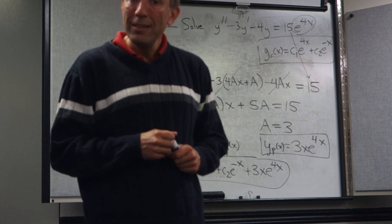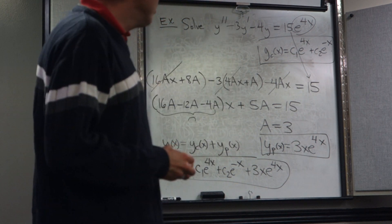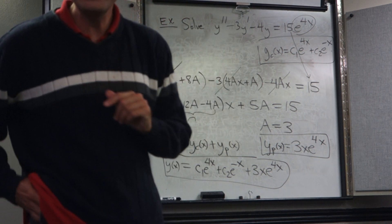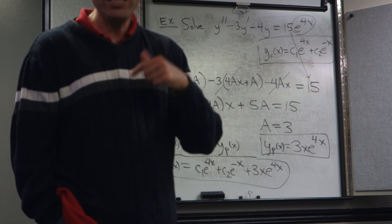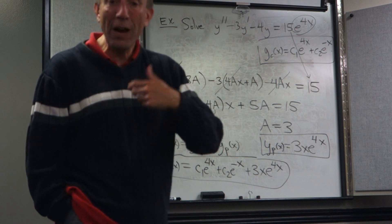Secondly, find the annihilator of capital F and use it to produce one particular solution to the non-homogeneous differential equation. And finally,